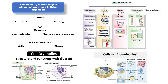Examples of monomers include amino acids, fatty acids, monosaccharides such as glucose, and nucleotides. These monomers join together to produce bigger molecules, which are called macromolecules.